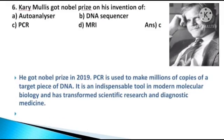Kary Mullis got the Nobel Prize for his invention of — options: autoanalyzer, DNA sequencer, PCR, or MRI. The answer is option C, PCR — polymerase chain reaction. He got the Nobel Prize in 1993. PCR is used to make millions of copies of a target piece of DNA. It is an indispensable tool in modern molecular biology and has transformed scientific research and diagnostic medicine.